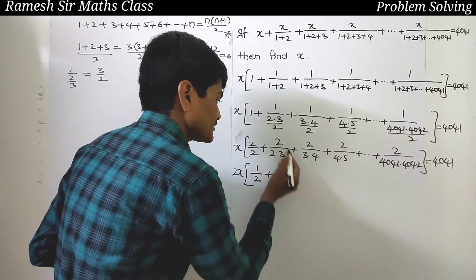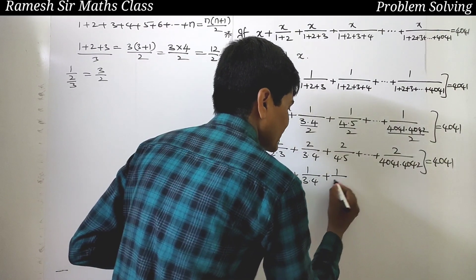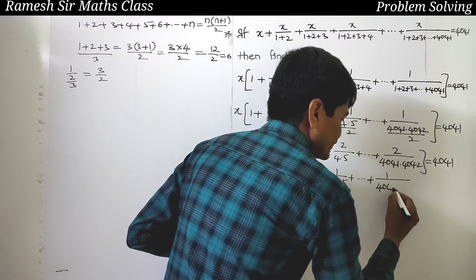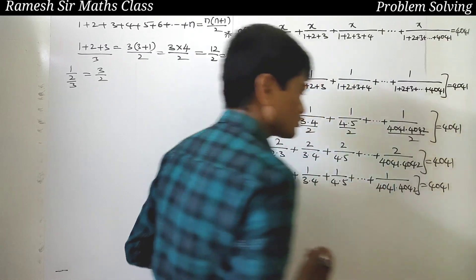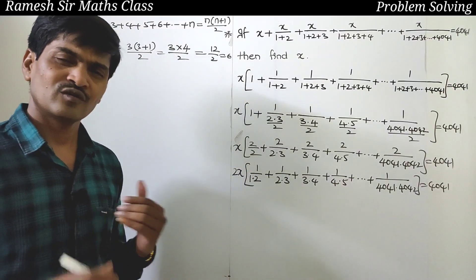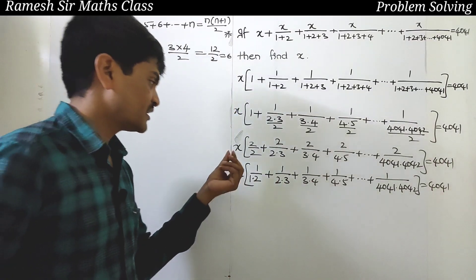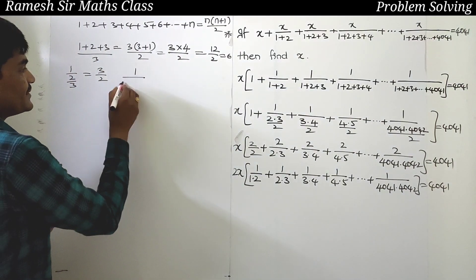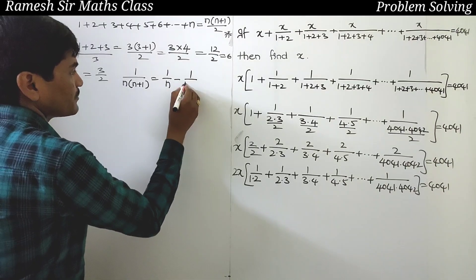We rewrite this as x times the sum: 1/(1×2) plus 1/(2×3) plus 1/(3×4) plus 1/(4×5) plus and so on plus 1/(4041×4042) equals 4041. Now, using the partial fraction formula: 1/[n(n+1)] equals 1/n minus 1/(n+1).